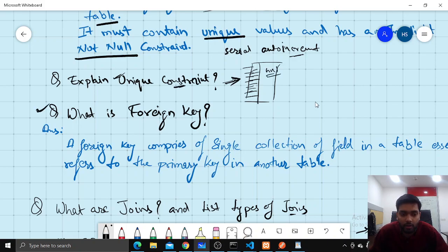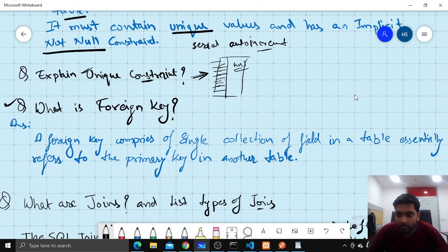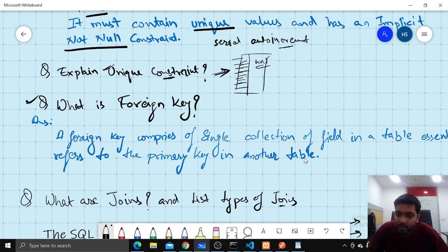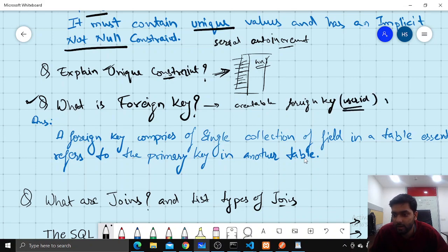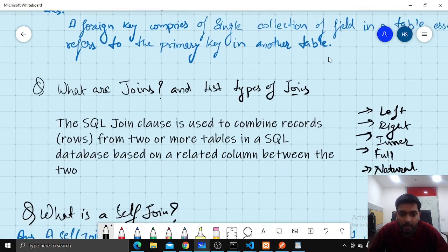Then let's talk about foreign key. Foreign key comprises of a single collection of fields in a table that essentially refers to the primary key of another table. The foreign key has to be called primary key in the user table.